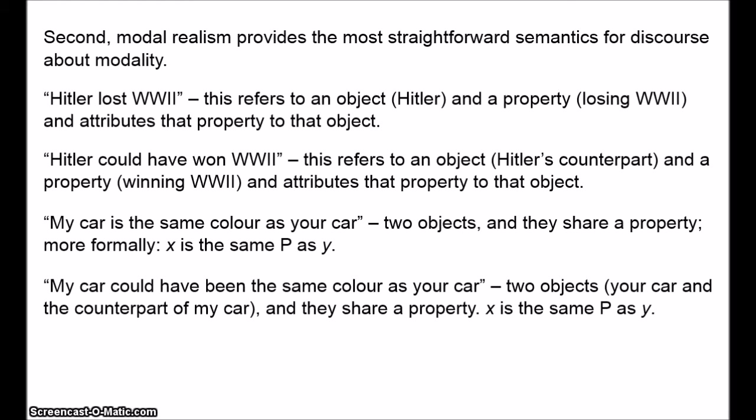So by taking our talk of ways things could have been at face value, modal realism offers a very straightforward semantic theory. Other views of the nature of modality are unlikely to deliver such a simple semantics. If we say that strictly speaking there are no possible worlds — that possible worlds are just tools, just human constructions — then when we say 'my car could have been the same colour as your car,' it's not entirely obvious what objects and properties we're referring to. We seem to be talking about possible cars, but if we're not realists about possibilities, there aren't literally speaking possible cars. Possible cars aren't objects that literally exist, so we can't successfully refer to them. The point is just that the modal realist seems to have the easiest time with it.